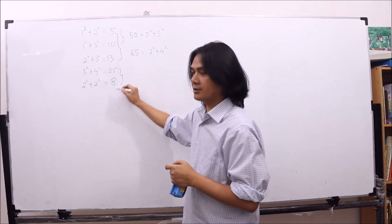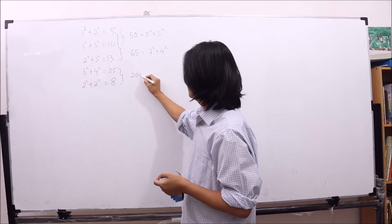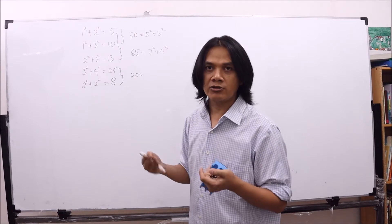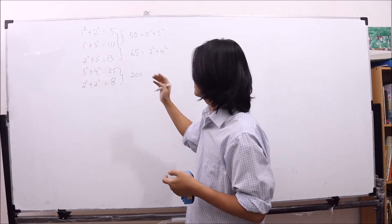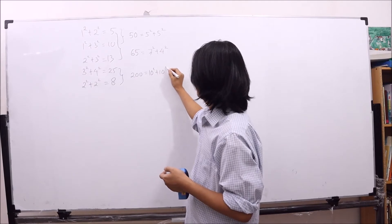How about 25 times 8? 25 times 8 is 200. You can guess, right? What are the two squares that we need in order for the sum of them to equal 200? 10 squared plus 10 squared.